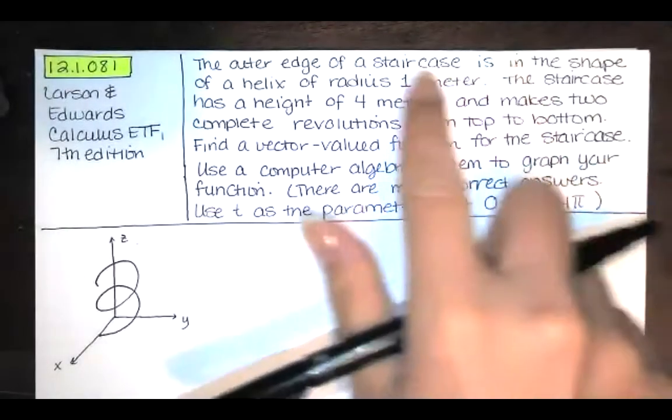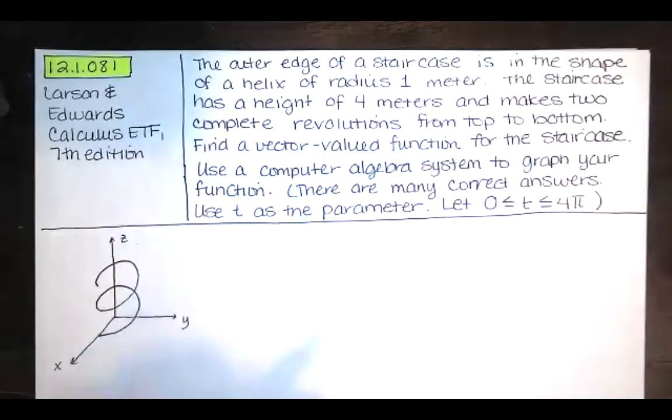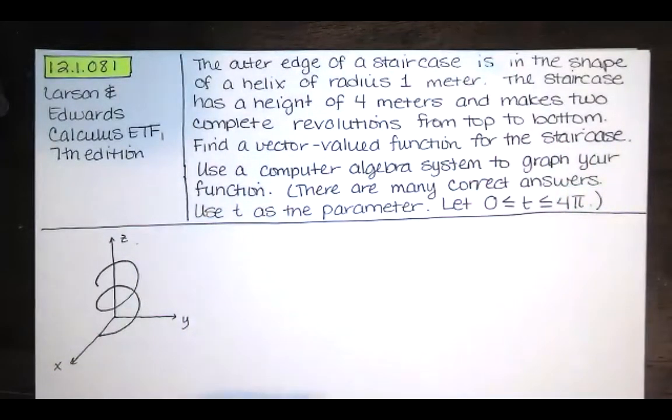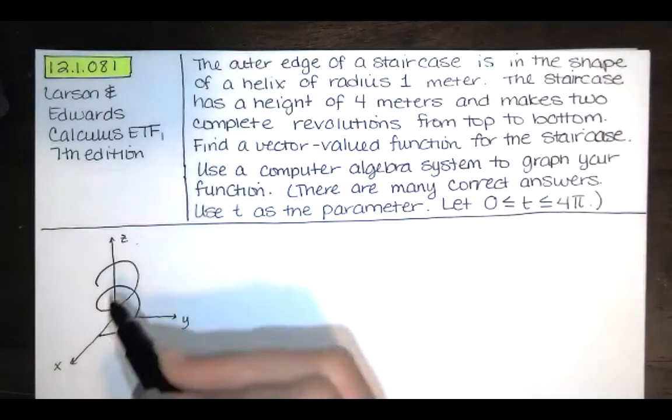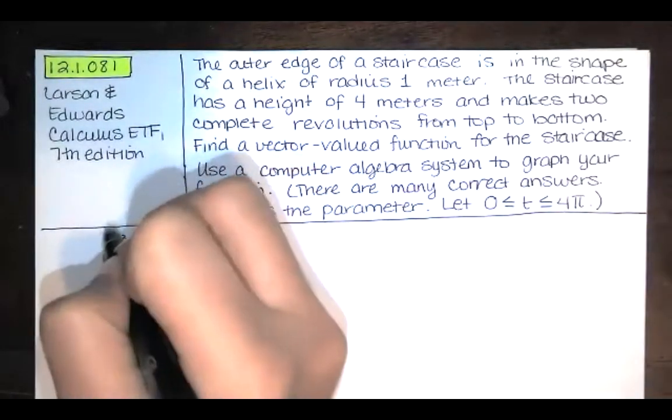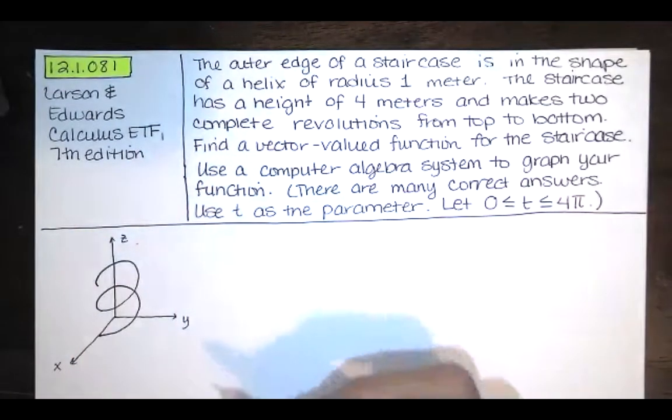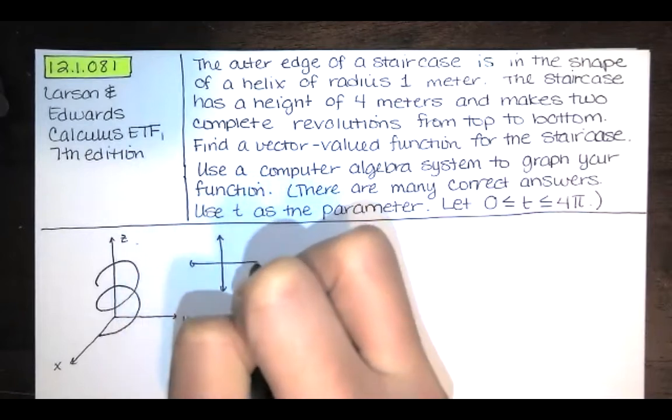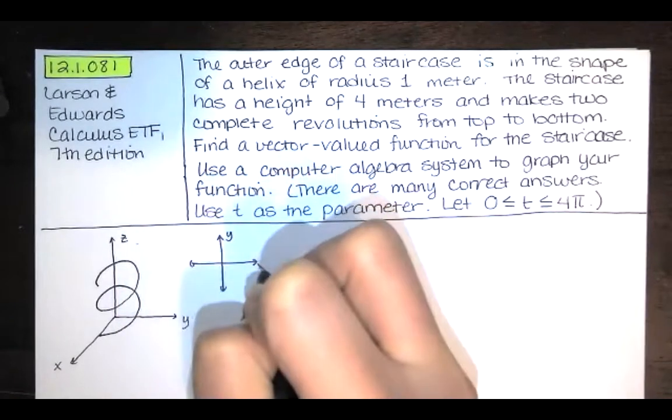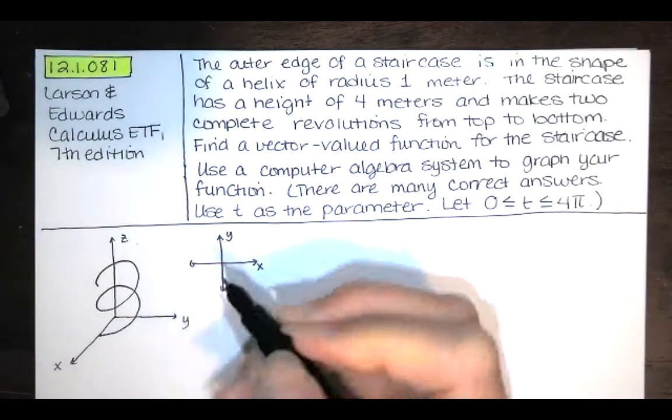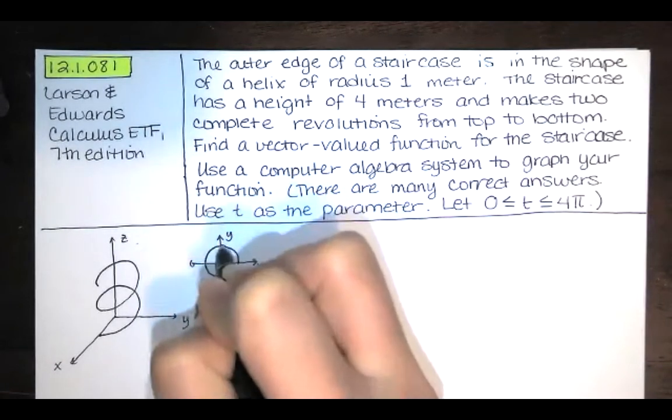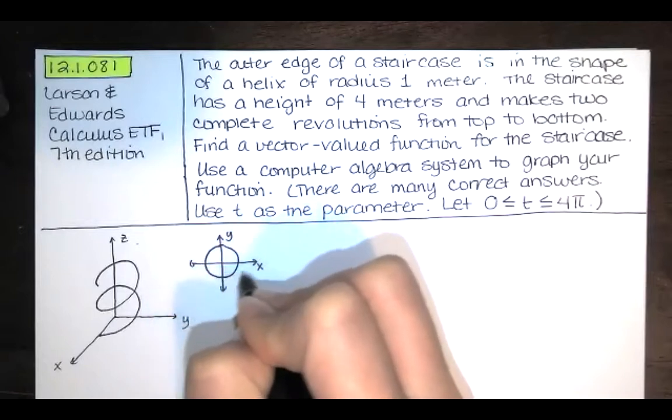We're told that this is the outer edge of a staircase. It's in the shape of a helix of radius 1 meter. So what that means for us is that when I look at this helix from the top, like if I'm up here and I'm looking down from that z axis, what I'm going to see is a circle of radius 1. But as we go around that circle, we're going up higher and higher.